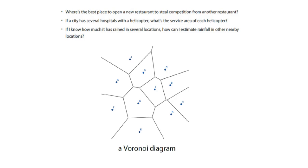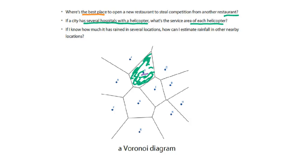For this Voronoi diagram, we can answer the following questions. For example: if a city has several hospitals with a helicopter, what is the service area of each helicopter? Suppose in this Voronoi diagram each site stands for a hospital with a helicopter. For hospital D, the service area will be this polygon — this cell. So any emergency from this cell will be covered by hospital D.